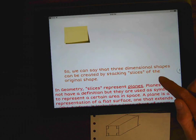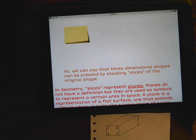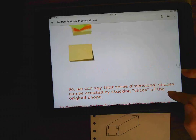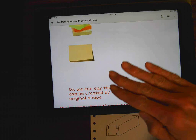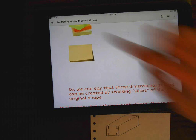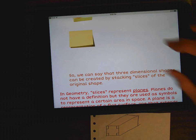All right. So we can say that three-dimensional shapes can be created by stacking the slices of the original shape, just like we did. We took all these post-its, stacked them together on top of each other, and then all of a sudden you got depth.